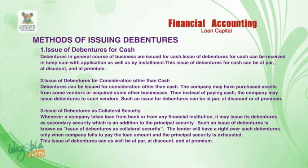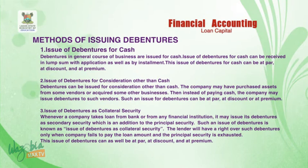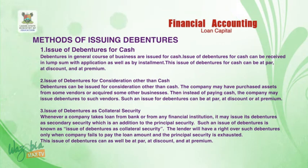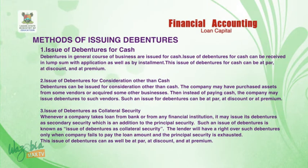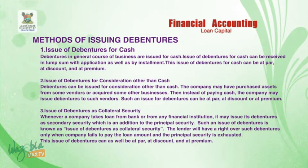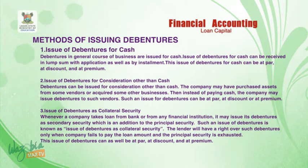Number three — issue of debentures as collateral security. Whenever a company takes a loan from a bank or any financial institution, it may issue its debentures as secondary security, which is in addition to the principal security. Such an issue is known as issue of debentures as collateral security. The lender will have a right over such debentures only when the company fails to pay the loan amount and the principal security is exhausted. This issue can also be at par, at discount, or at premium.